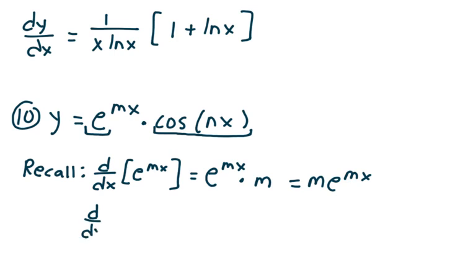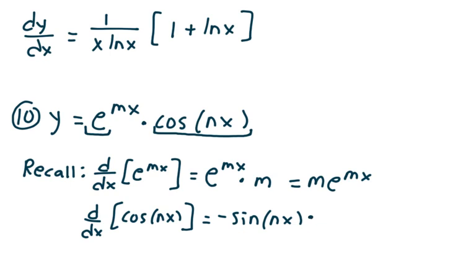The derivative of cosine of nx with respect to x is negative sine of nx, and I multiply by the derivative of nx, which is n. When I simplify that, I get negative n sine of nx. Now we're all set up to take the derivative of e to the mx times cosine of nx.